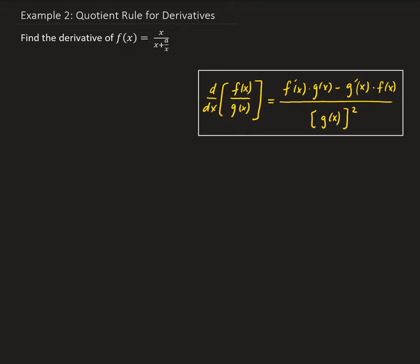In this example we want to find the derivative of f of x equal to x divided by x plus a over x, where a is a constant. To do this we need to apply the quotient rule for derivatives. We're going to call the numerator part f of x, and the denominator here is going to be denoted as g of x.